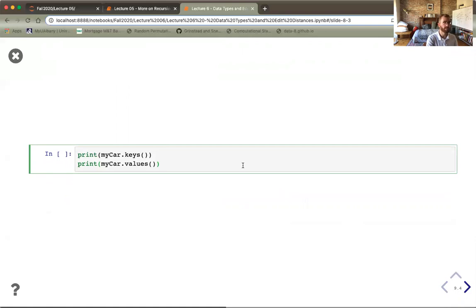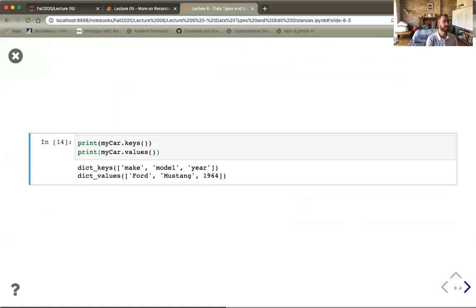If you have a dictionary and don't necessarily know what the keys or values are, you can always apply those methods. I have my object, use a period, and then invoke keys or values with nothing in the round brackets. That's essentially all I wanted to cover in terms of data collection types. This is something you might need to refer back to or look for other reading sources.